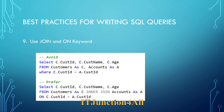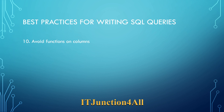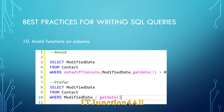The tenth point: avoid using functions on columns in the WHERE clause. A function needs to be called for every record in the result set, which can slow down performance. Also, if a function surrounds the column you are filtering on, indexes on that column cannot be used. For example, instead of using DATEDIFF on the ModifiedDate column, you can rewrite the query using WHERE ModifiedDate is less than GETDATE().